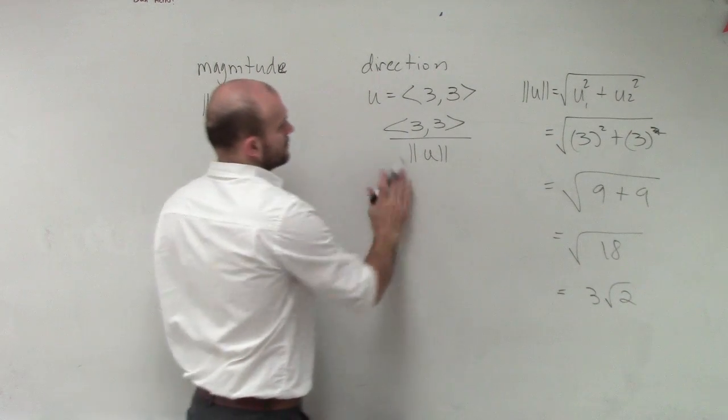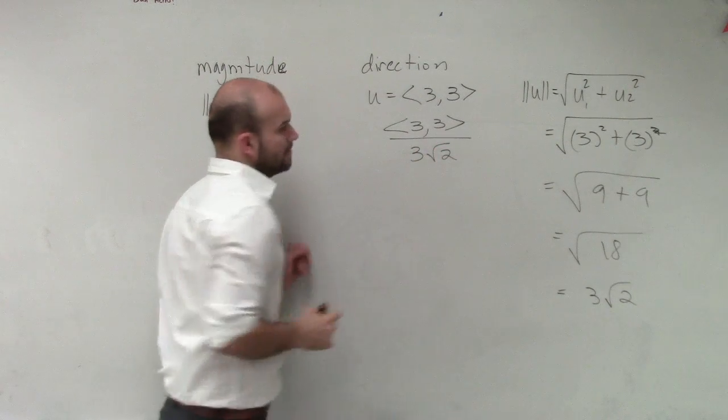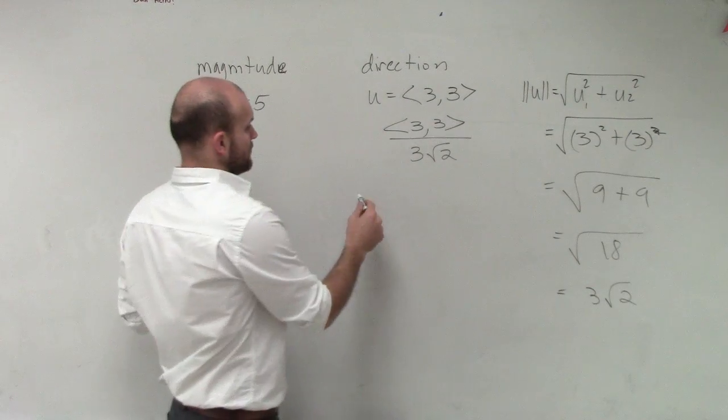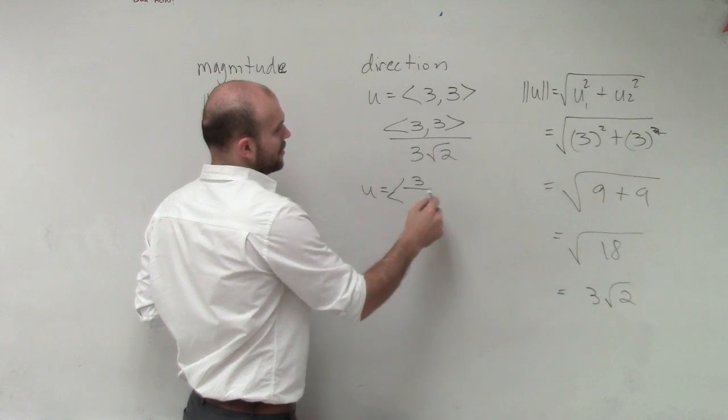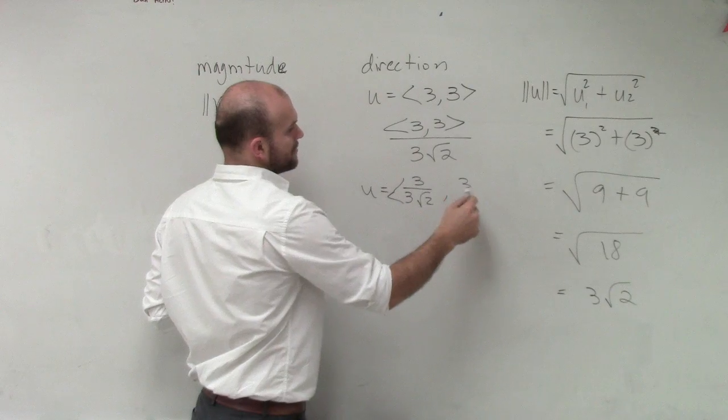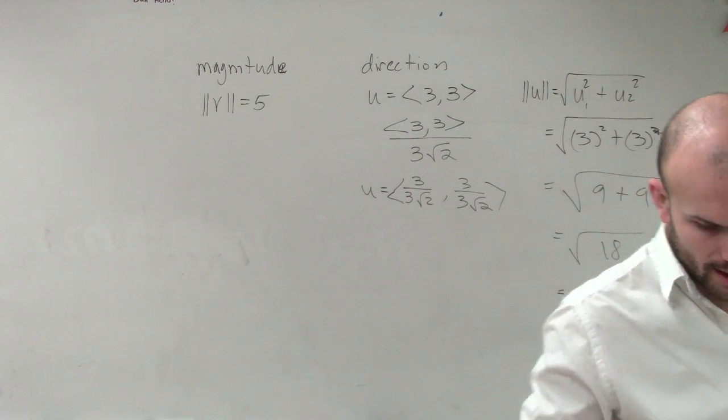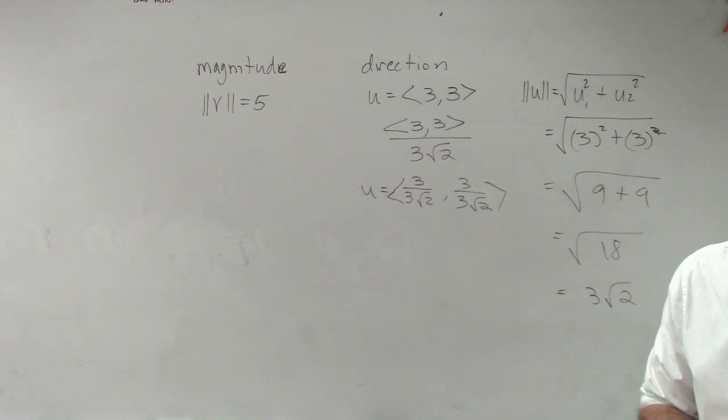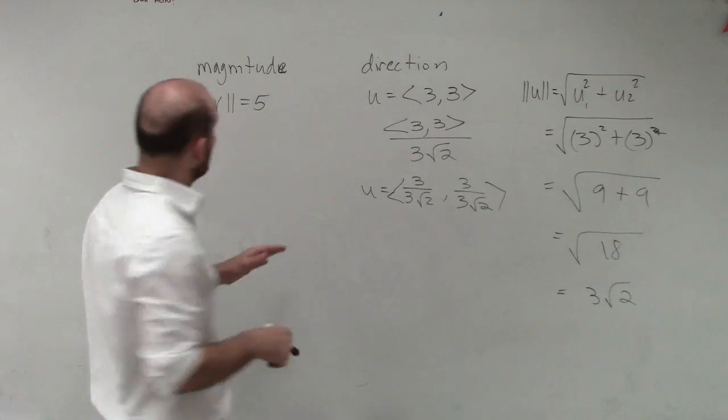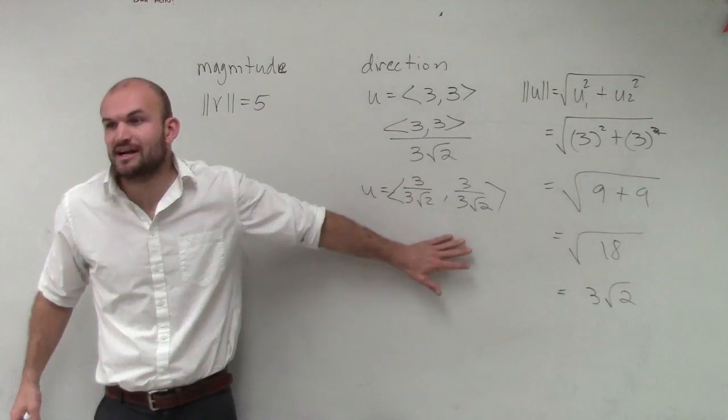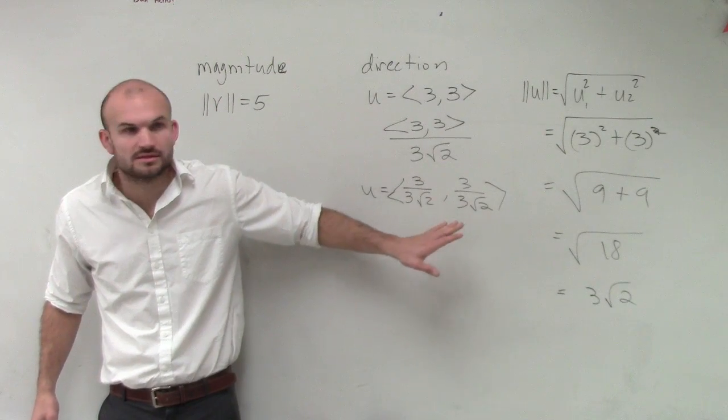So now we know the magnitude of u, which is 3 radical 2. So we can write u now as its unit vector of <3 over 3 radical 2, 3 over 3 radical 2>. Now this is before we're getting all crazy here with this. But now, so this is my unit vector before simplifying.